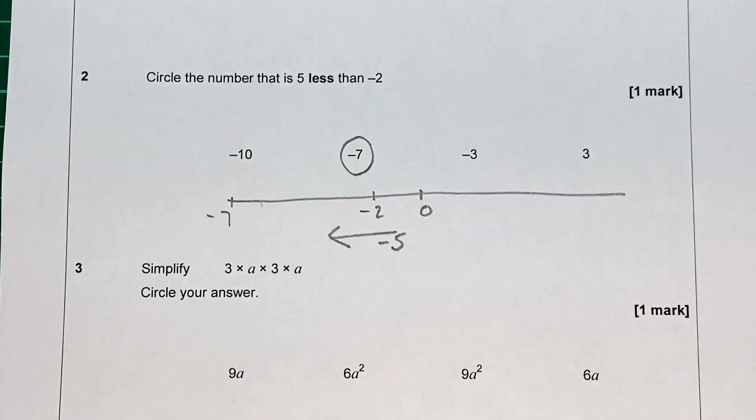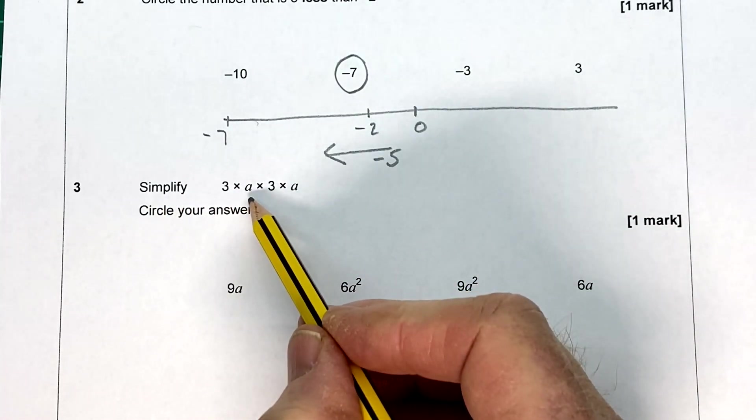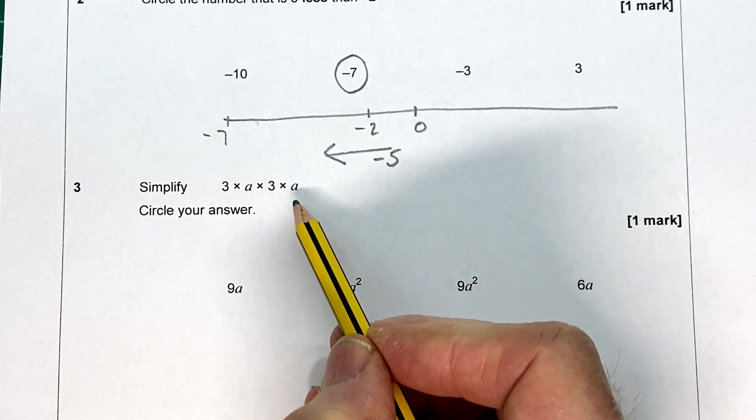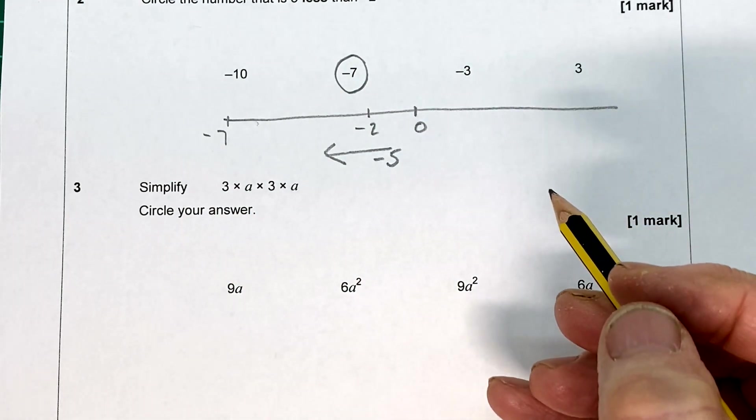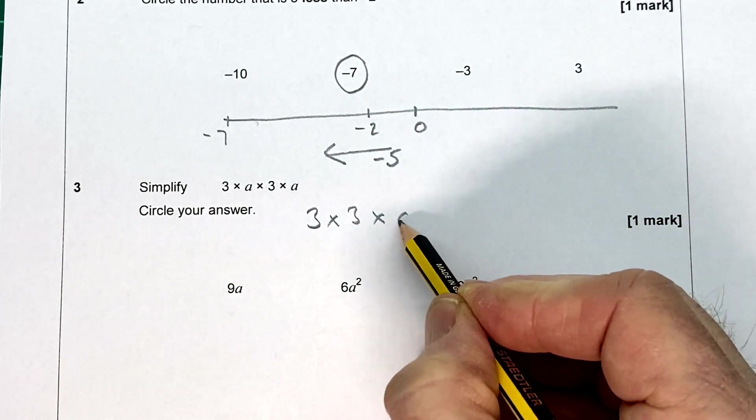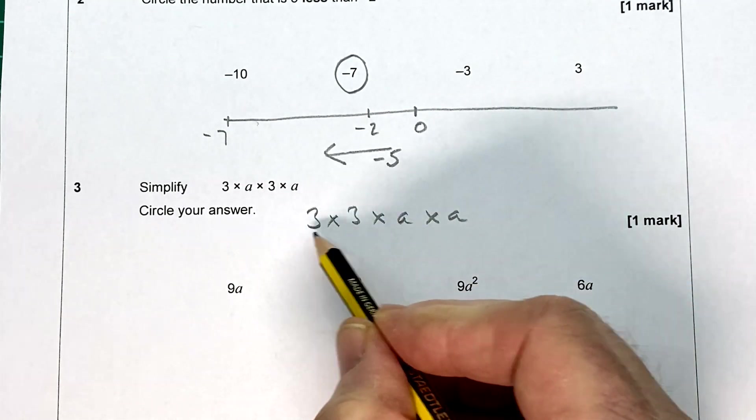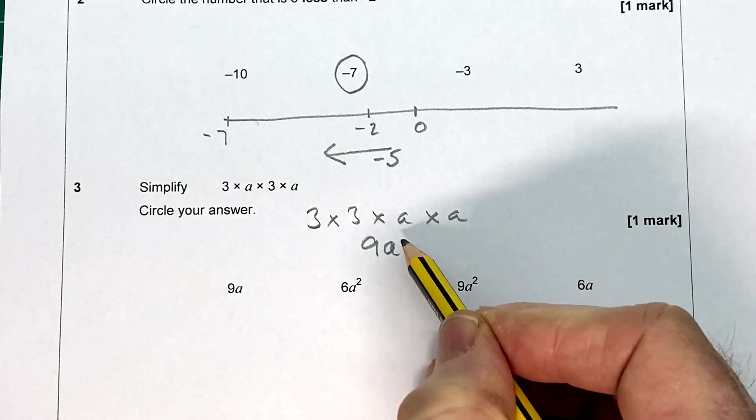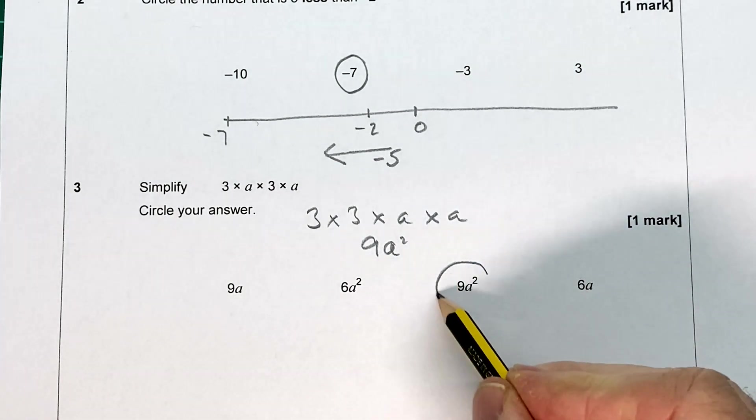Question three. Simplify three times a times three times a. These are all multiplied together. If they're all multiplied together, that means they can be written in any order. So we could write that as three times three times a times a. Well three times three is nine. And a times a is a squared. So we've got the answer nine a squared.